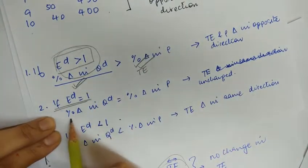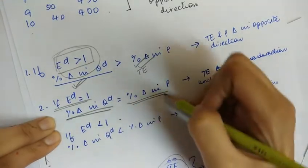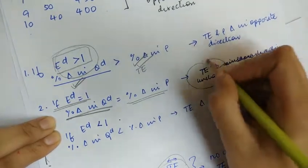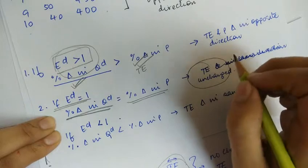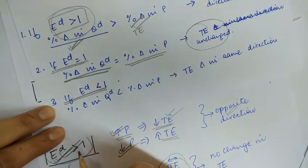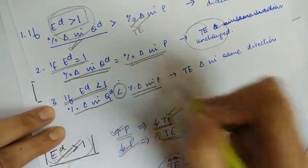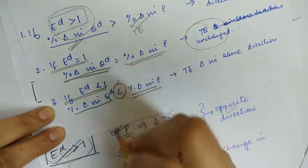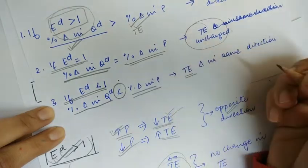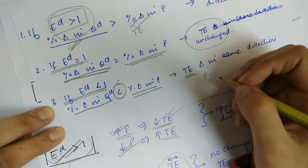When the elasticity of demand is equal to one, the percentage change in quantity demanded equals the percentage change in price, and total expenditure remains constant. If the elasticity of demand is less than one — that is, the percentage change in quantity demanded is less than the percentage change in price — you will see that the total expenditure and price will change in the same direction.